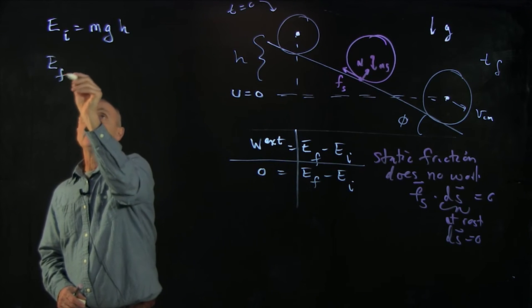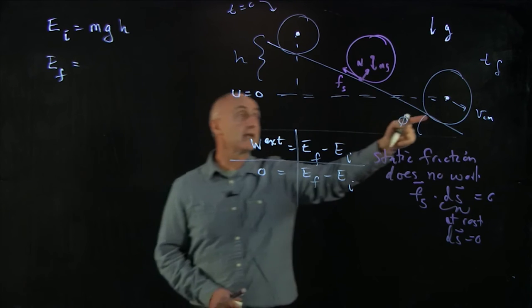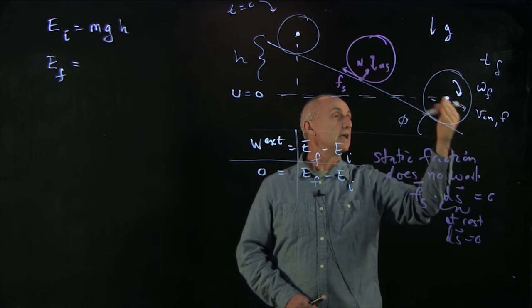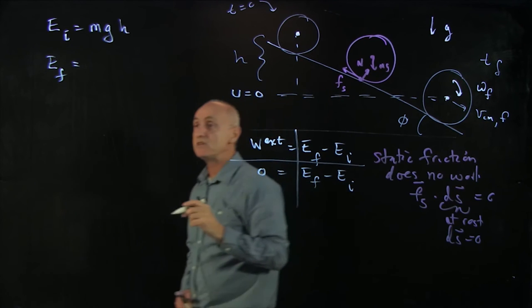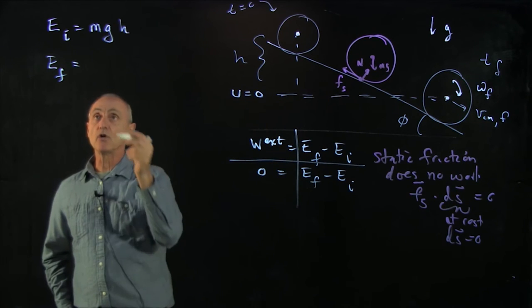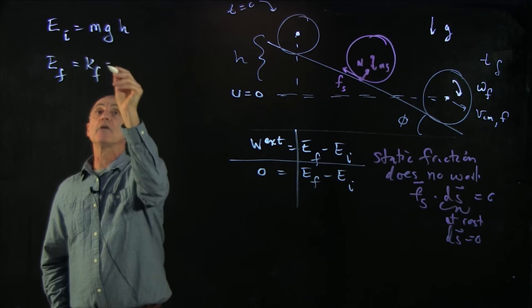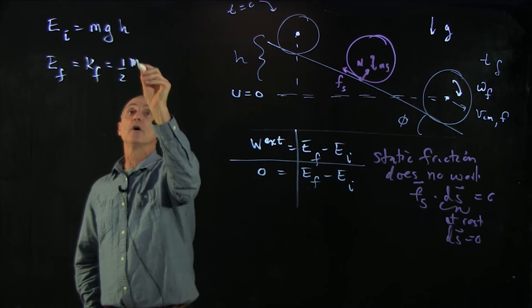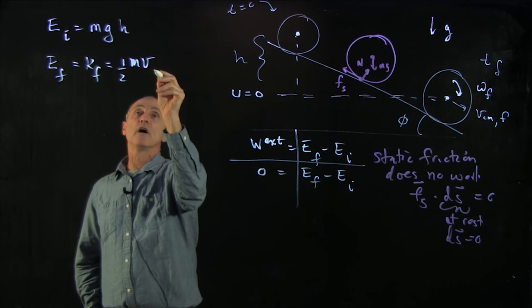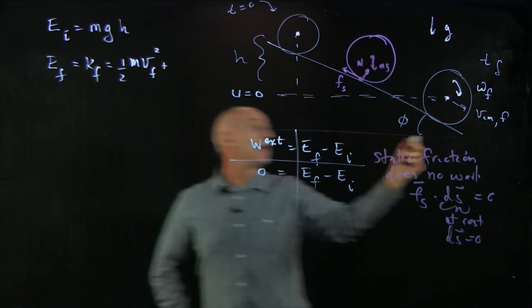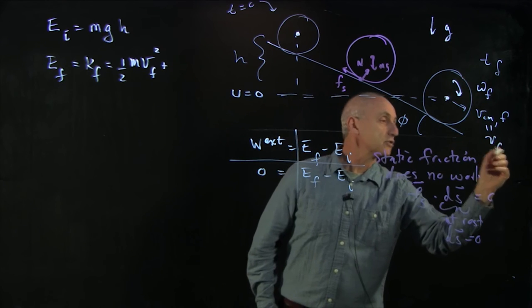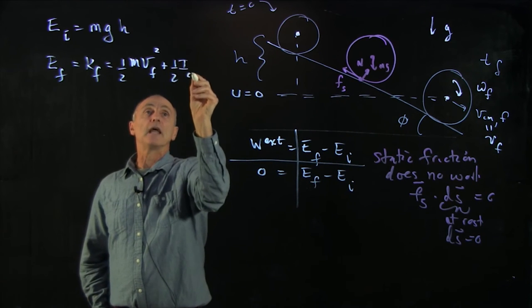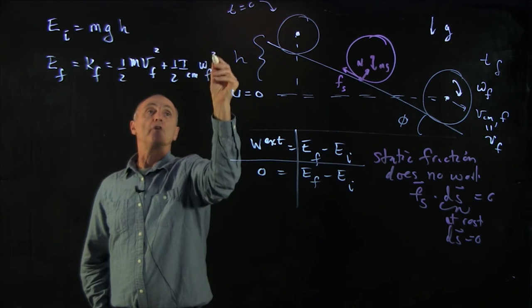The final energy is only kinetic energy. The wheel is rolling with omega final. Its center of mass is moving with v center of mass final. And we just saw that the kinetic energy has two contributions: the translational kinetic energy, 1 half m v final squared, and it has the kinetic energy of rotation.